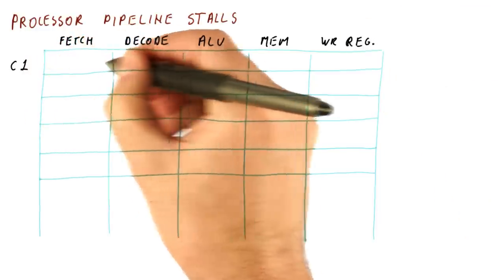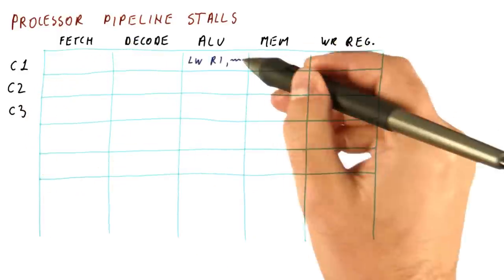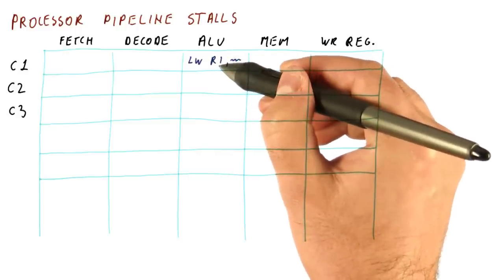This is what happens in cycle one, cycle two, cycle three, etc. Suppose we have a load instruction here in our pipeline and it's going to load into R1 something from memory.